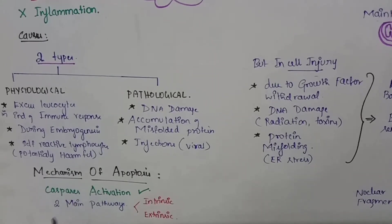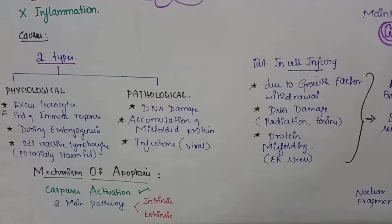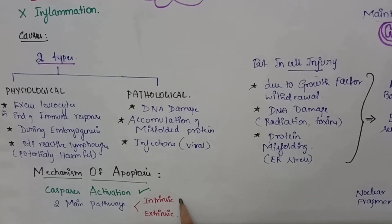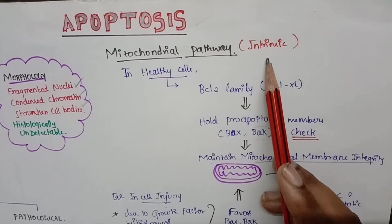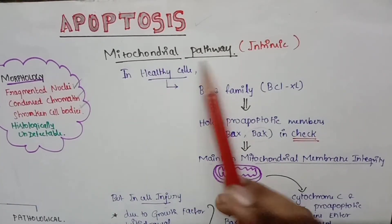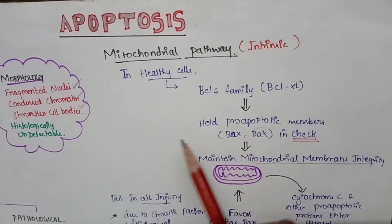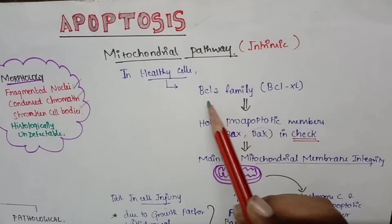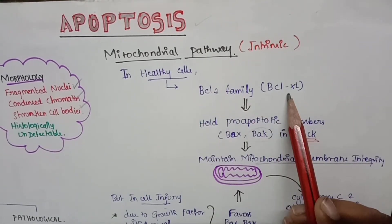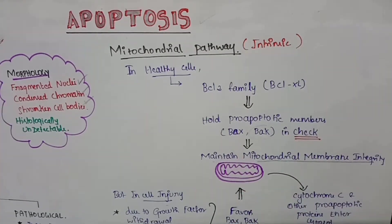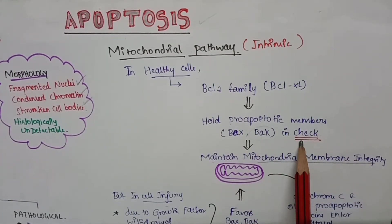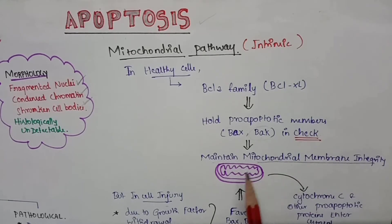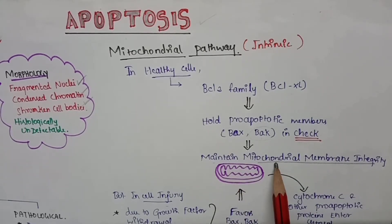Going into the mechanism of apoptosis, there will be caspase activation. These caspases are the enzymes which play a main role in apoptosis. There are two main pathways: intrinsic and extrinsic. The intrinsic pathway is also known as the mitochondrial pathway. In healthy cells, the BCL-2 family and its nearby protein BCL-XL hold the pro-apoptotic members BAX and BAK in check.